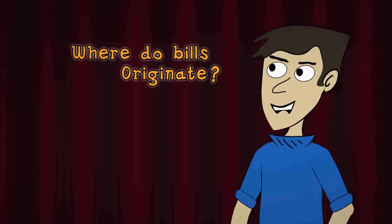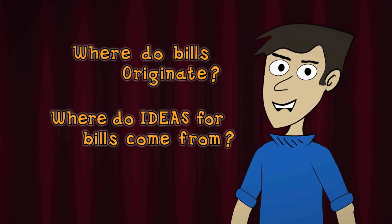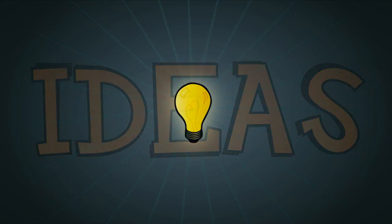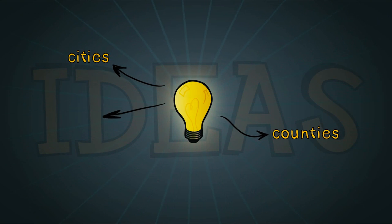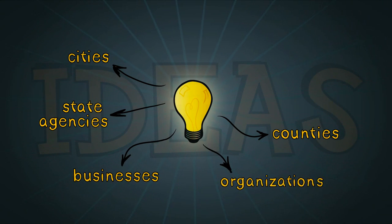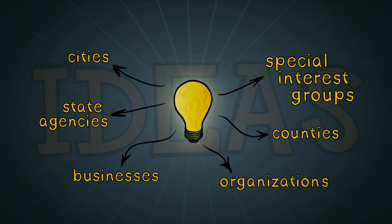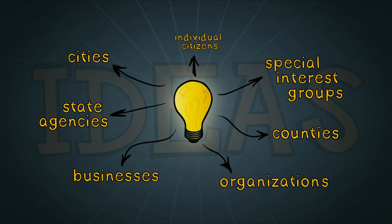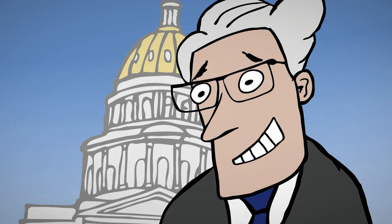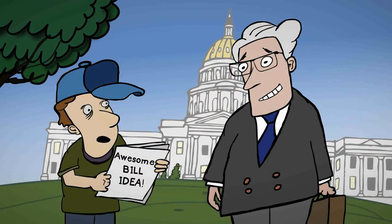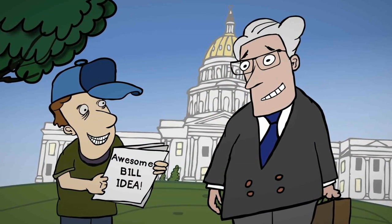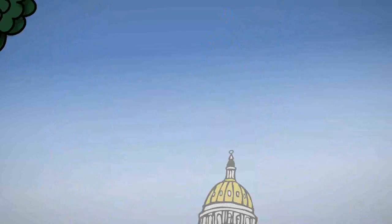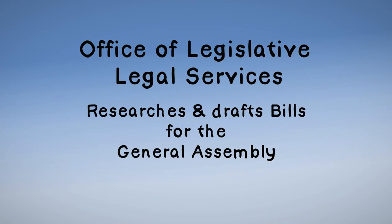But where do bills originate? Where do the ideas that become bills come from? Ideas for laws can come from anywhere: cities, counties, state agencies, businesses, organizations, special interest groups, and individual citizens. If a legislator is approached with an idea, he or she can decide to sponsor that idea and request a bill be drafted by the Office of Legislative Legal Services.